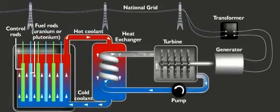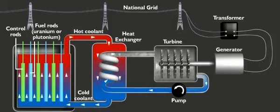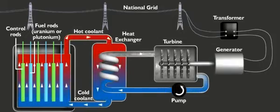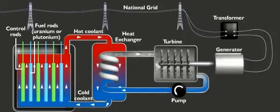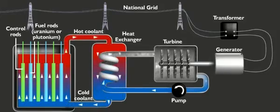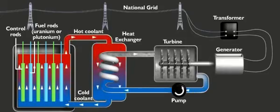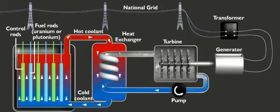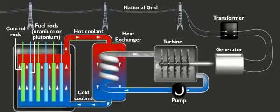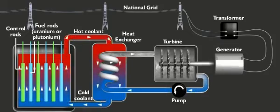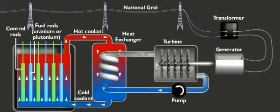Nuclear power stations use the energy released during nuclear reactions to generate heat. Coolant, circulating around the reactor, transfers the heat generated to a heat exchanger. Here steam is produced, which drives a steam turbine, which in turn drives an electrical generator.